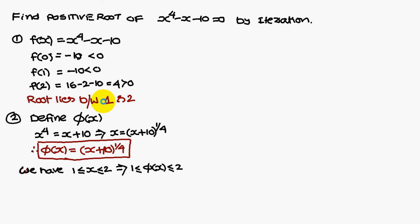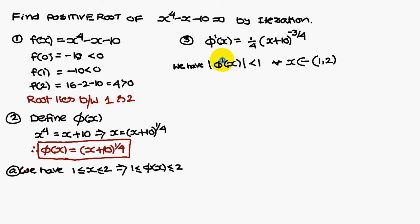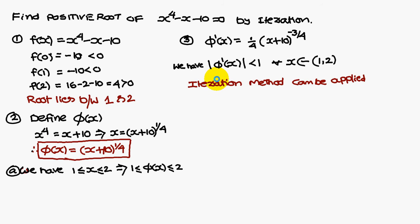If you observe, the root lies between 1 and 2. So, if x lies between 1 and 2, phi of x also lies between 1 and 2. Similarly, modulus of phi dash of x is less than 1 for all x belonging to the interval 1 and 2. Where phi dash of x is nothing but 1 by 4 into x plus 10 whole power 1 by 4 minus 1, that is minus 3 by 4. So now we can satisfy this condition — modulus of phi dash of x less than 1 for all x in 1 and 2. Therefore, iteration method can be applied.